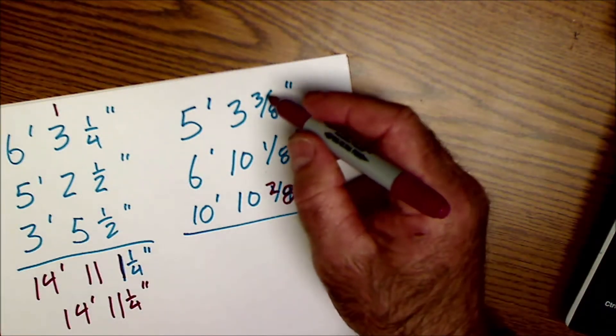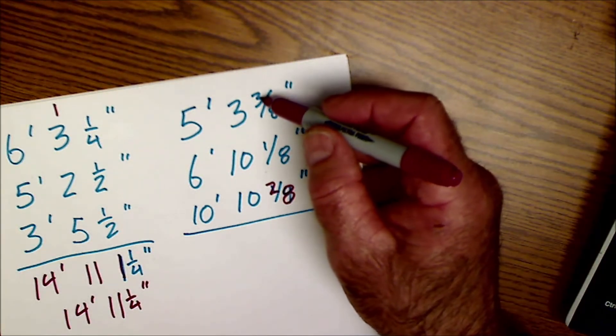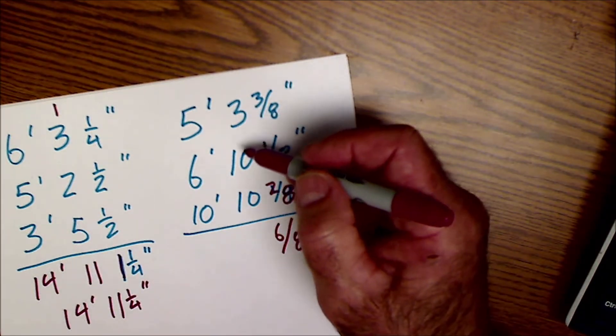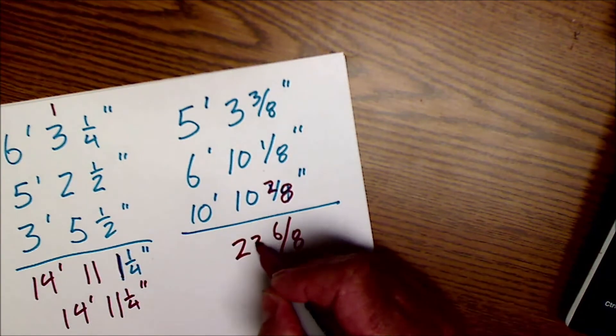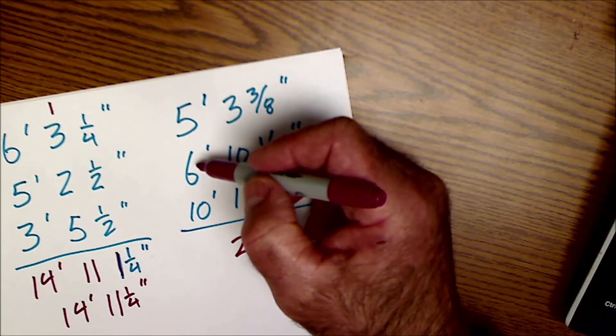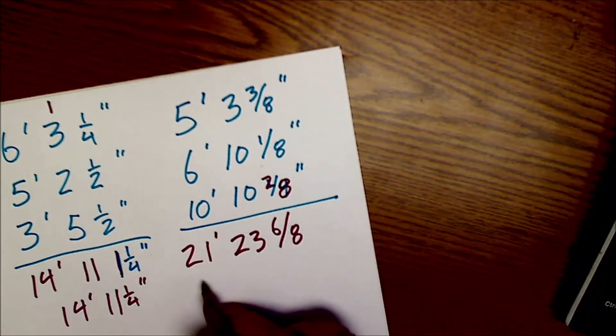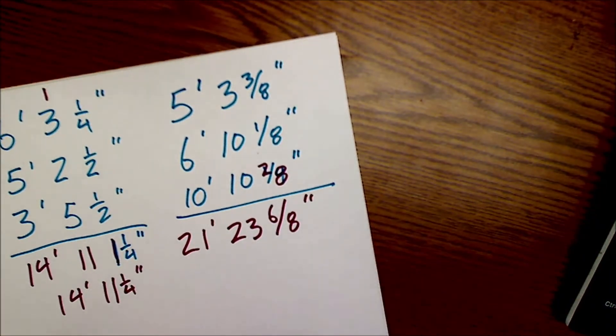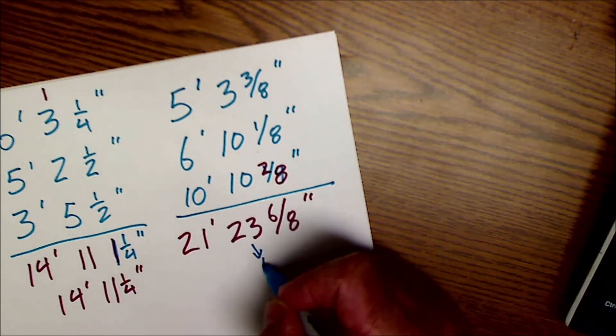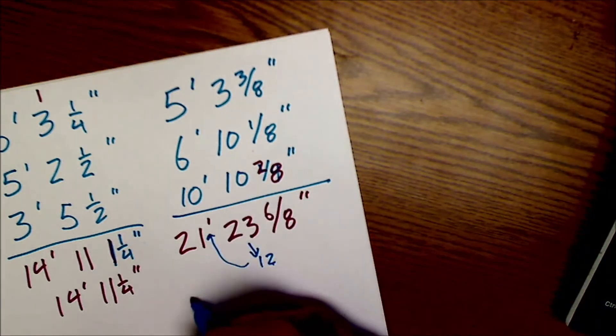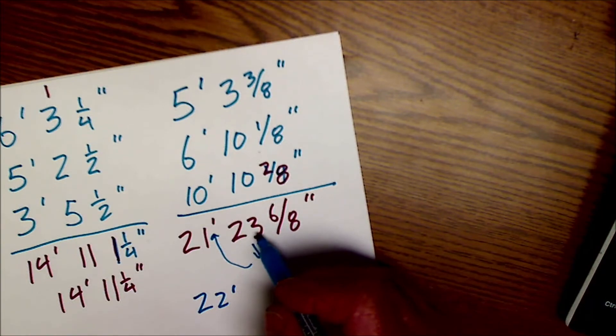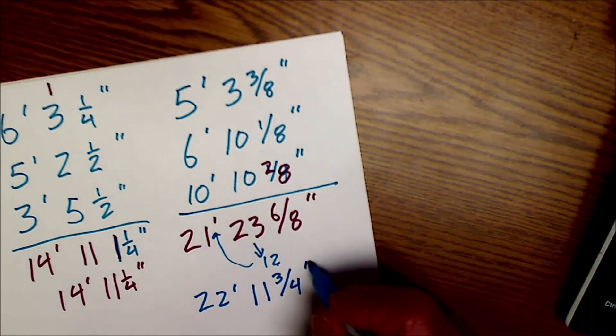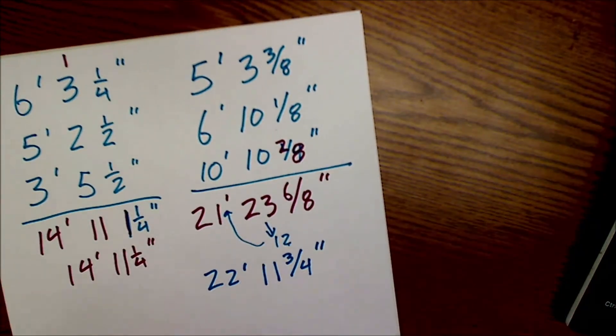I'm going to add these three fractions together by adding only the numerator. Three and one is four, four and two is six. So that's going to give me six eighths. Three and ten is thirteen and ten is twenty-three. And here I have five and six eleven, eleven and ten is twenty-one. So I have twenty-one feet twenty-three and six eighths of an inch. Well twelve goes into that twenty-three one time. So I'm going to take twelve out of that and put it here to give me twenty-two feet. I pull a twelve out of there and I'm left with an eleven. Six eighths still reduces. Two will go into that three times, two will go into that four times. So I'm left with twenty-two feet, eleven and three quarters of an inch.